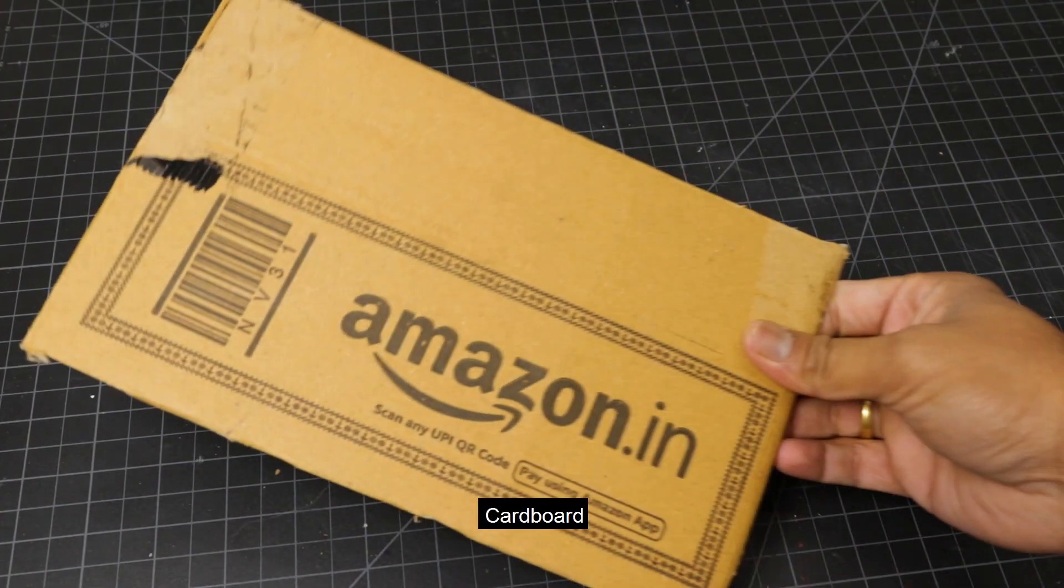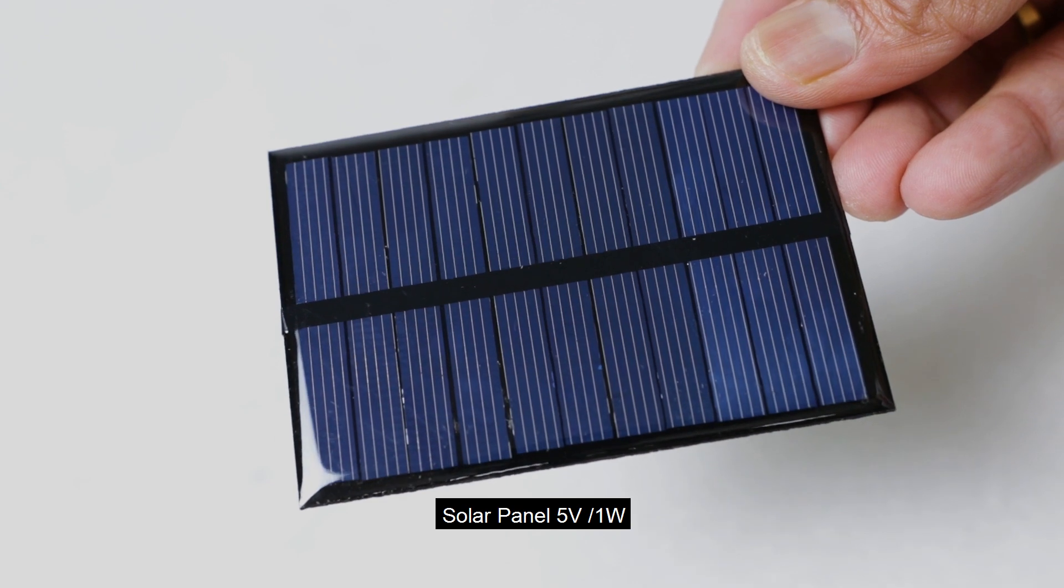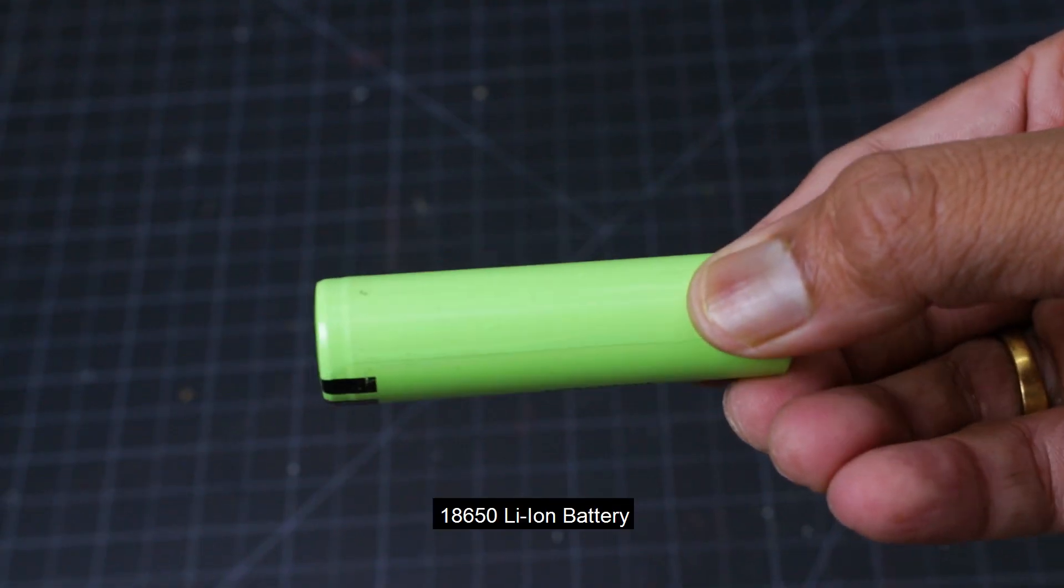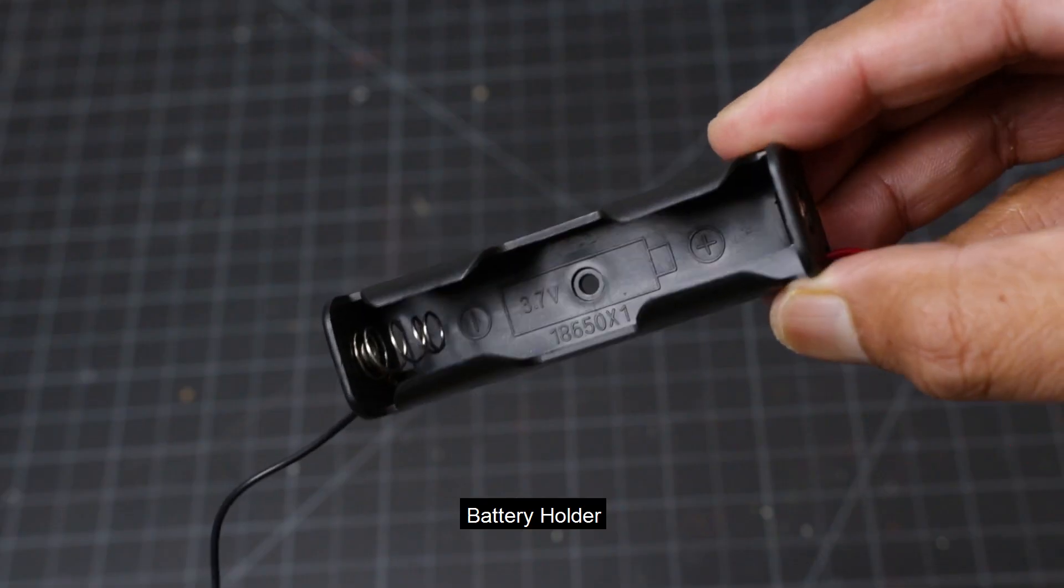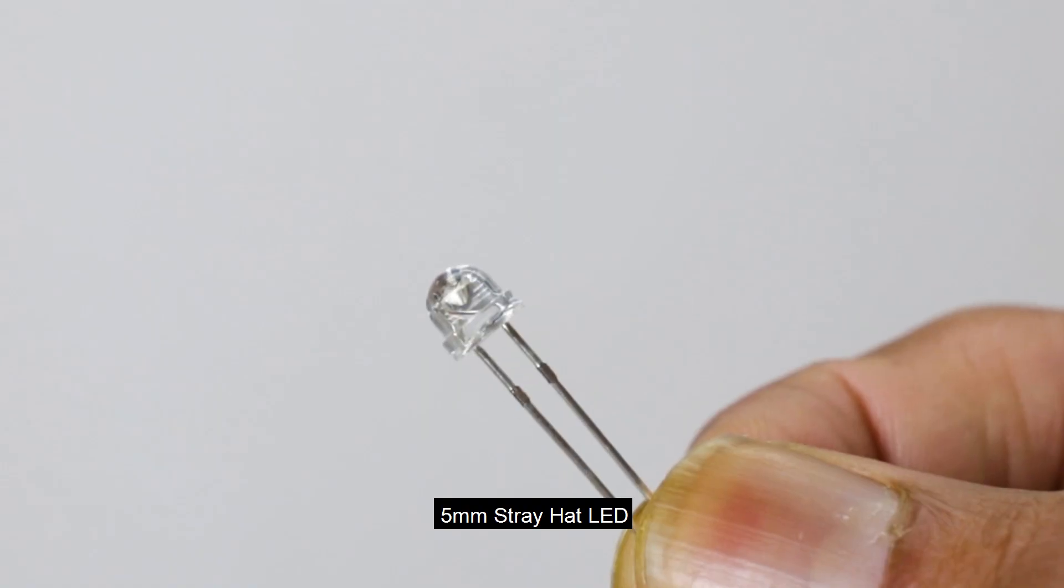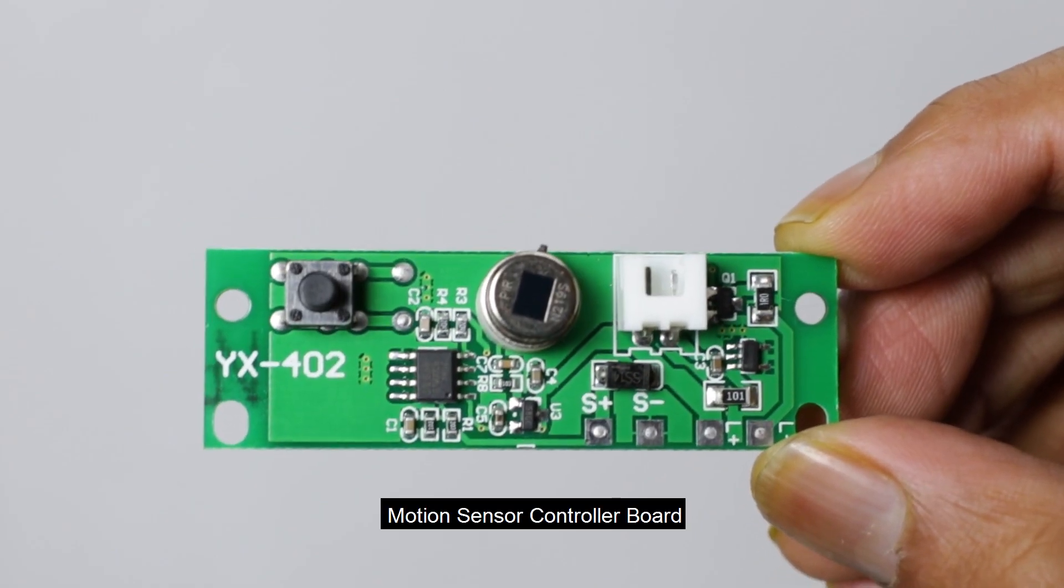To make this project, you will require cardboard, a 5V solar panel, 18650 lithium-ion battery, battery holder, prototype board, 18 LEDs, and finally the controller board.